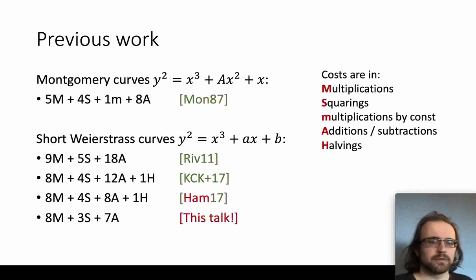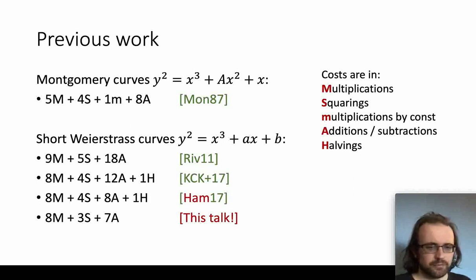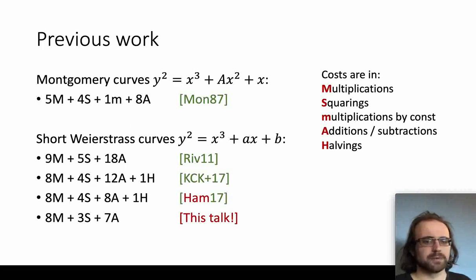There has been a lot of previous work on the subject of Montgomery ladders, starting with Montgomery's work in 1987, which applies only to the so-called Montgomery curves and is extremely efficient for those curves. For short Weierstrass curves — the more common case — the Montgomery ladder has been less efficient, but has slowly improved in efficiency over the past decade or so: down from 14 multiplies per bit in 2011, to 12 multiplies per bit in 2017, and down to 11 multiplies per bit today.